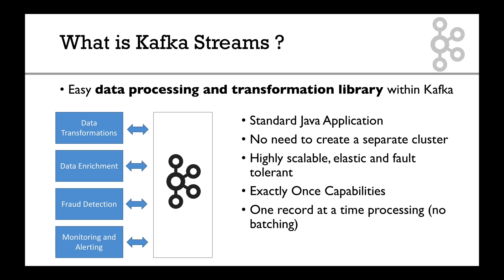Kafka streams processes one record at a time, so there's no batching — this is true streaming. Some other libraries like Spark Streaming process things in batches. It works for any application size: whether you have a small project or a very large project, you write the same code, you get the same application, and it scales the same way.